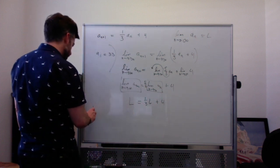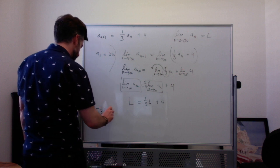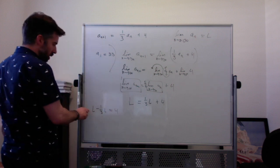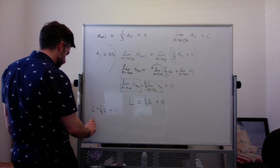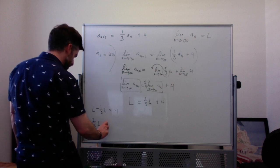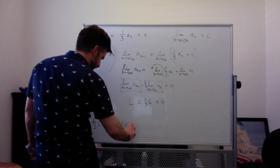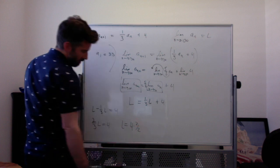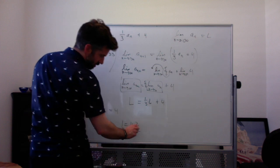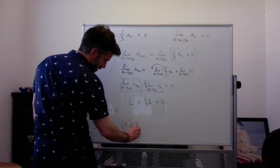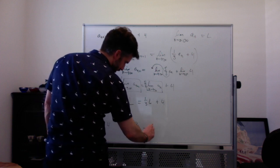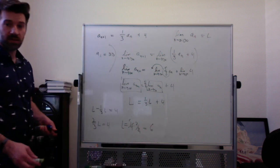So subtract 1 third L, L minus 1 third L equals 4. 1 L minus 1 third L is 2 thirds L, multiply both sides by 3 halves to get L equal to 4 times 3 halves. 4 times 3 halves is 2 times 3, right? So you cancel 2 here and 2 there, and you get 6. So the limit is 6.